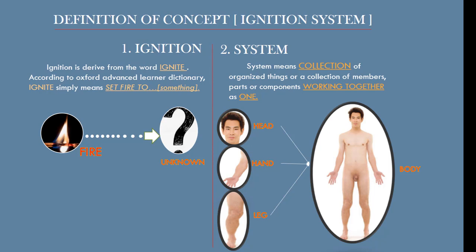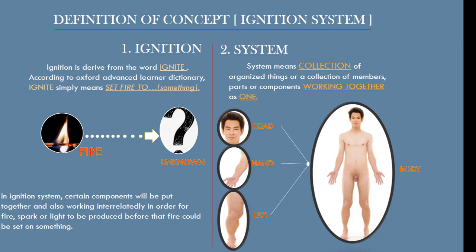In an ignition system, certain components are put together and work interrelatedly in order for a fire, spark, or light to be produced. Before that fire could be set on something, there are things that work together for that fire to be produced.